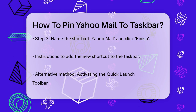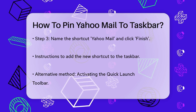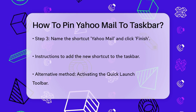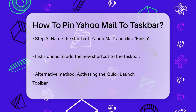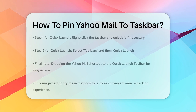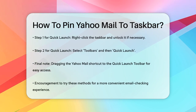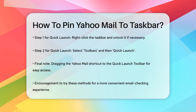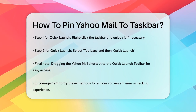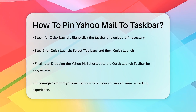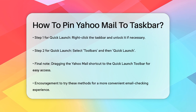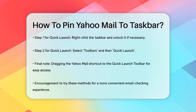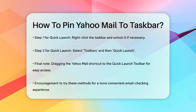If you prefer another method, you can also activate the Quick Launch toolbar, which sits alongside the taskbar. Here's how: right-click the taskbar and unlock it if it's locked. Then right-click the taskbar again and select Toolbars, and then Quick Launch. Once the Quick Launch toolbar is activated, you can drag your Yahoo Mail shortcut from the desktop to this toolbar.